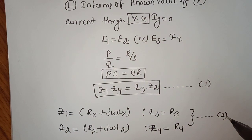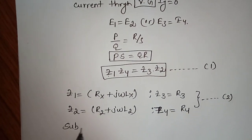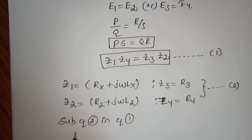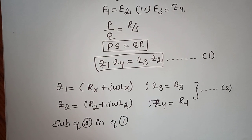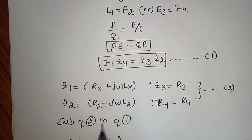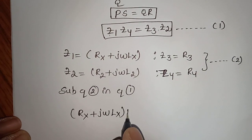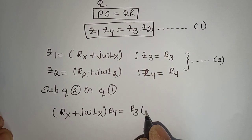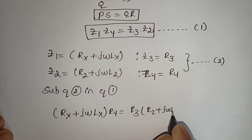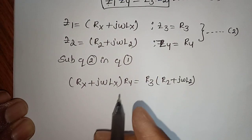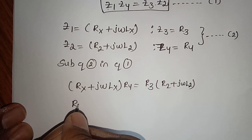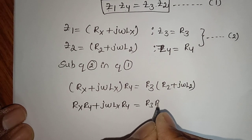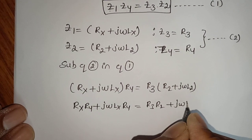Now we substitute equation number 2 into equation number 1. Z1·Z4 becomes (Rx + jωLx)·R4, and Z3·Z2 becomes R3·(R2 + jωL2). Expanding: Rx·R4 + jωLx·R4 equals R3·R2 + jωL2·R3.